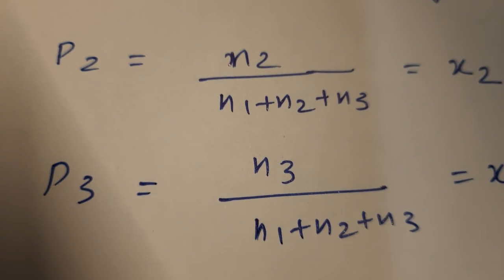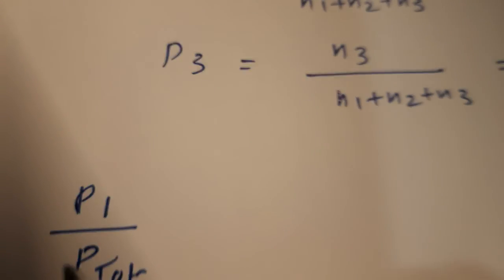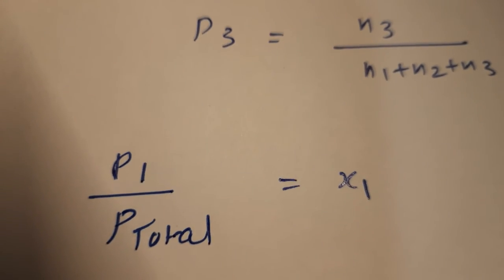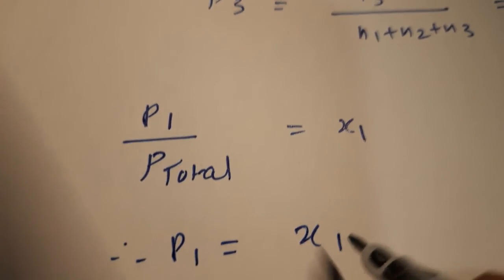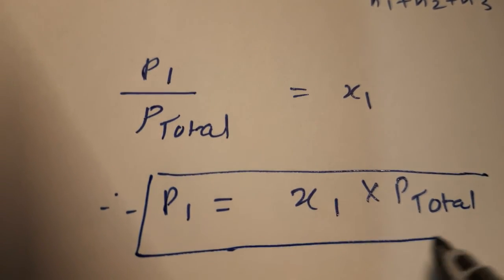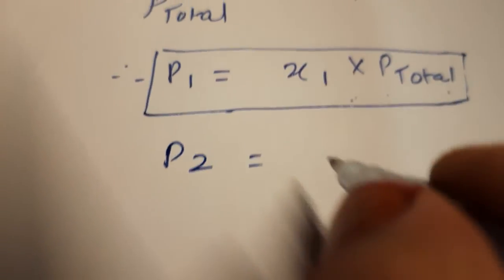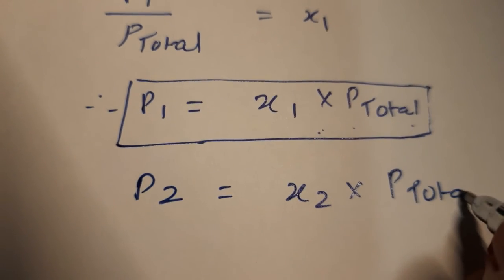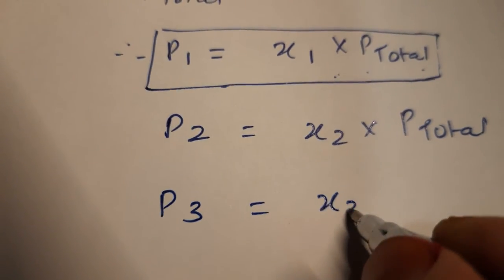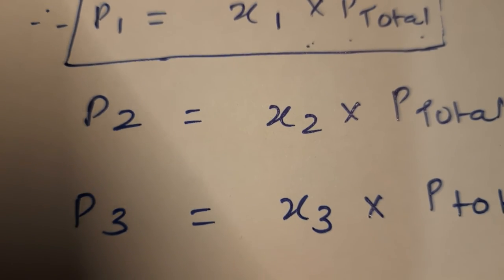So we can write P1 upon P total equals x1, therefore P1 equals x1 into P total. This is the formula: the partial pressure of any gas equals its mole fraction into total pressure. Similarly, P2 equals x2 into P total, and P3 equals x3 into P total. The general equation is P_i equals x_i into P total.